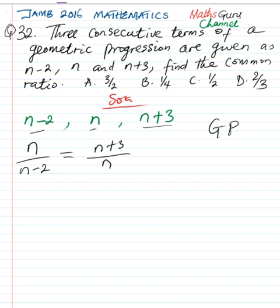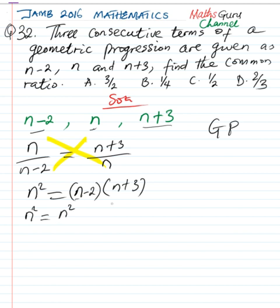When we cross-multiply this expression, we're going to have n times n, which is n squared, equal to n-2 times n+3. So we're going to have n squared equal to n times n is n squared, n times 3 is 3n, negative 2 times n is negative 2n, and negative 2 times positive 3 is negative 6.